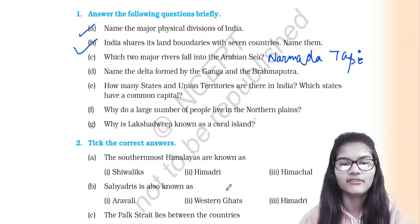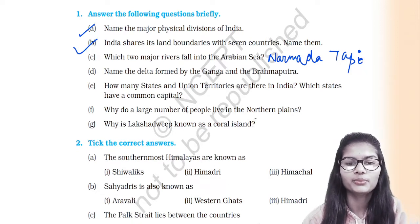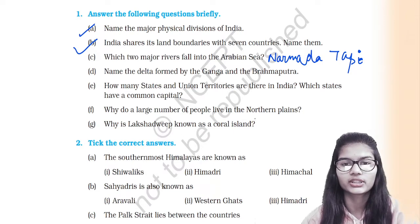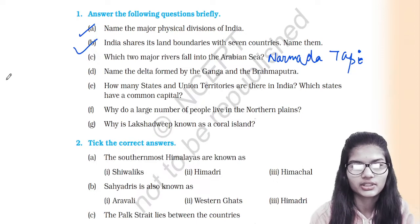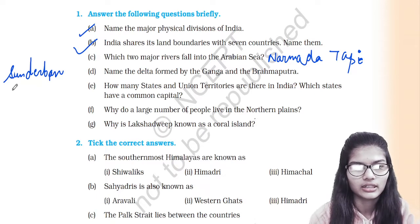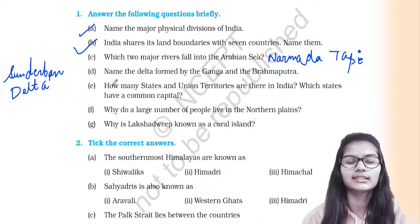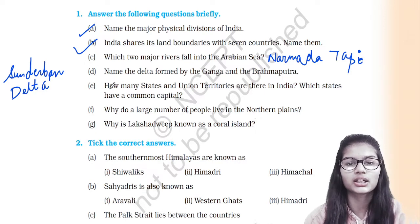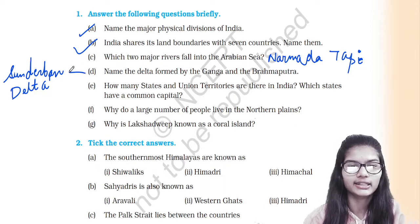Next, name the delta formed by the Ganga and Brahmaputra. The delta formed by the Ganga and Brahmaputra rivers is the Sundarban Delta. The Sundarban Delta is the delta which is formed by the Ganga and the Brahmaputra.